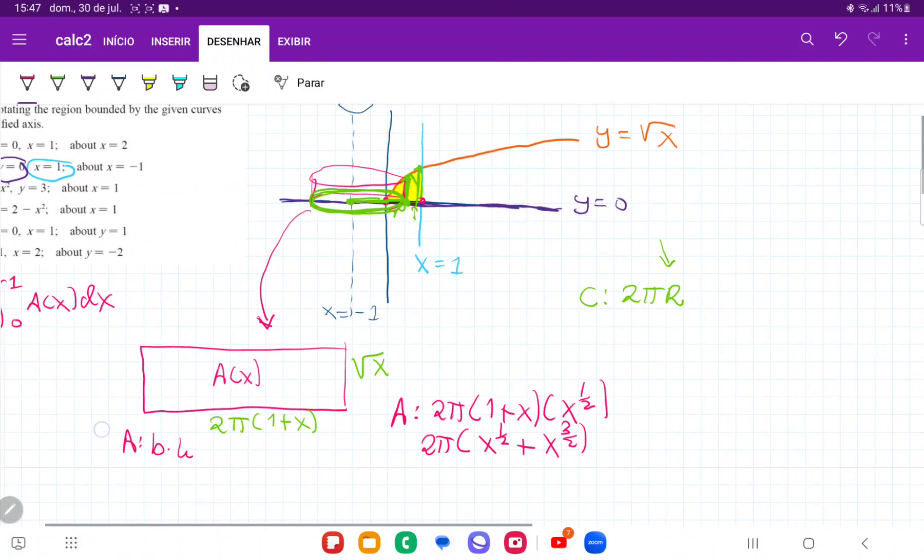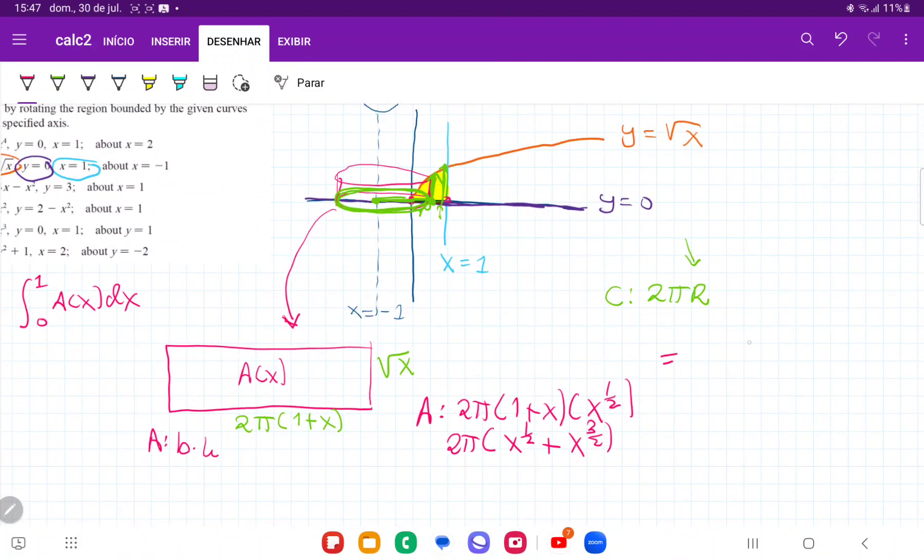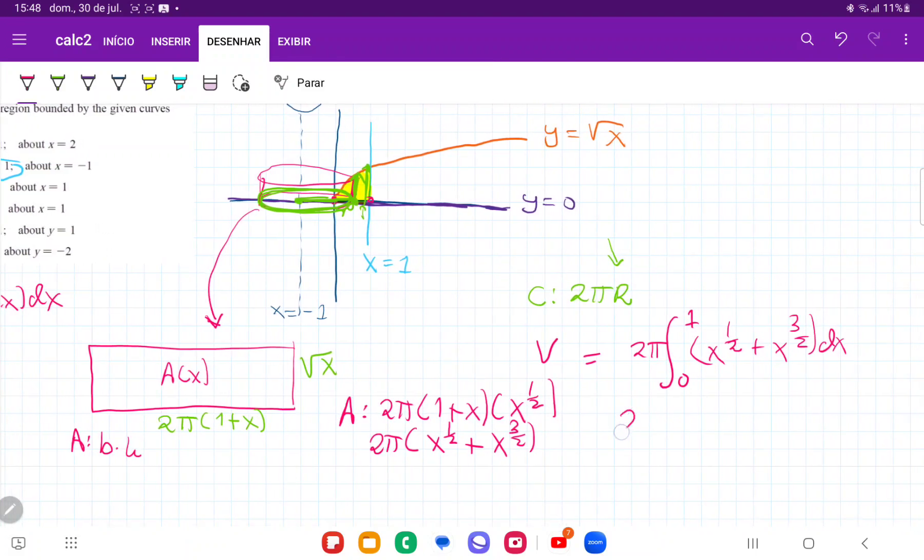And so now that I have an expression for my area, I can integrate it. Therefore, my volume is going to be the integral from 0 to 1, because we're summing up these cylinders from 0 to 1 where my area is bounded, of 2π times (x to the 1/2 plus x to the 3/2) because that's my expression for the area. And now all I need to do is integrate it.